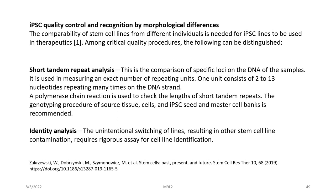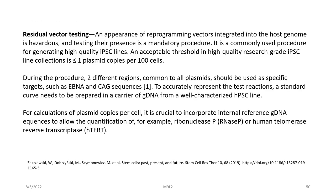Identity analysis is an important quality control aspect; unintentional switching of lines resulting in stem cell line contamination requires rigorous assays for cell line identification. Residual vector testing is also very important: the appearance of reprogramming vectors integrated into the host genome is hazardous, and testing their presence is mandatory. The acceptable threshold in high-quality research-grade iPSC line collections is less than or equal to one plasmid copy per 100 cells (less than 1%). During the procedure, two different regions common to all plasmids — such as EBNA and CAG sequences — should be used as specific targets, and a standard curve needs to be prepared using gDNA from a well-characterized iPSC line.